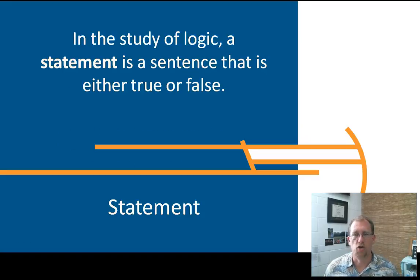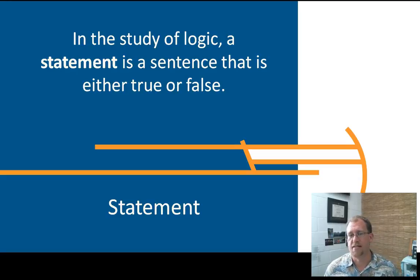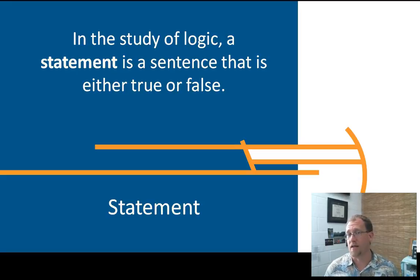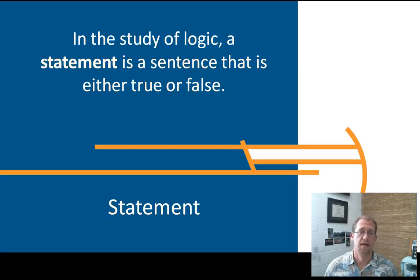Let's define the most important term you're going to be using in this section, and that is the word statement. In the context of logic, a statement is a sentence that is either true or false. I could say something like, I have yellow toes — that's false, but it is a statement. Or I could say, I have 10 toes — that is true. So statements can be either true or false, and we're going to use that digital relationship here in a little bit.